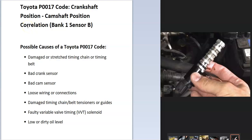Today I'm talking about a Toyota with the P0017 code — what it is and how you go about fixing it. A Toyota P0017 code is a crankshaft position/camshaft position correlation, bank one, sensor B.